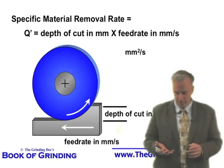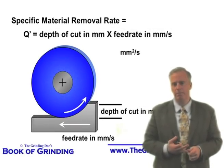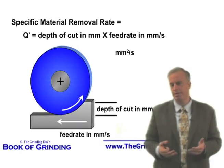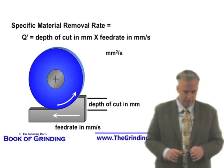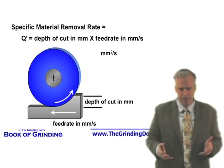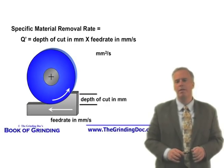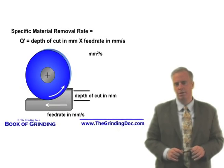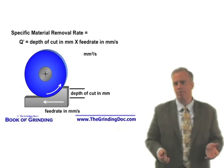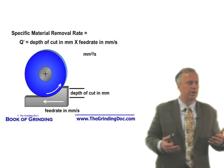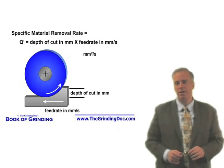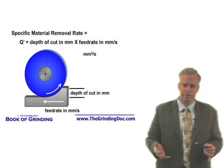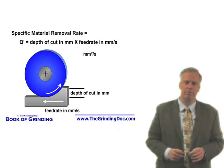Why does this matter? Let's say you're grinding tungsten carbide and you want to get high material removal rates to reduce cycle time. Typically, every wheel and workpiece combination will have material removal rates that are typical for that grinding operation. If I'm doing rough grinding of tungsten carbide end mills, a typical material removal rate for that operation is a Q' of five square millimeters per second.